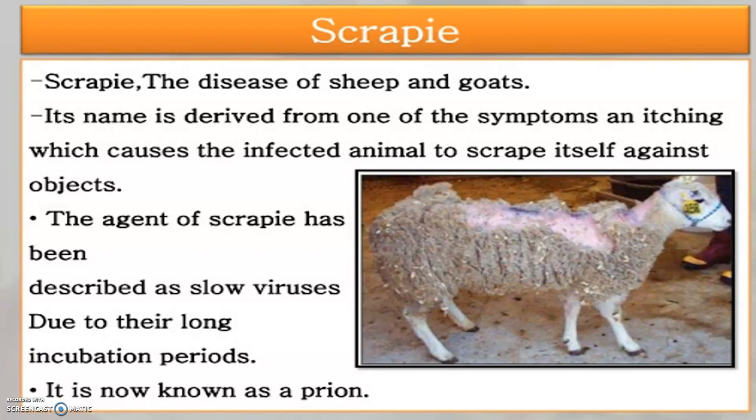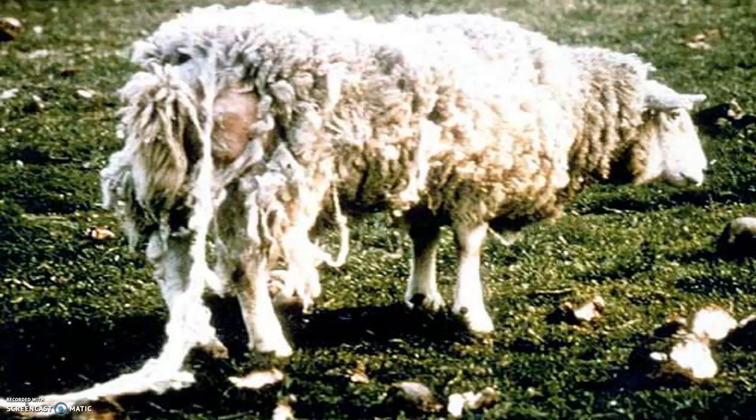Moving to sheep disease — scrapie affects sheep and goats. They show itching symptoms and rub their skin against hard objects. This causes secondary bacterial infection and loss of wool due to the itching behavior.